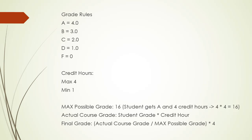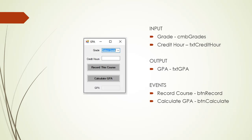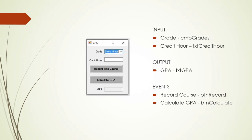To calculate the final grade we simply do the actual course grade divided by the maximum possible grade and then multiply it by four, and that gives us the final grade. Our form is very simple: a drop-down menu to select the grade A, B, C, D, or F, a text box to input credit hours, then two buttons — one to record the course and one to calculate the GPA, which is displayed in another text box.